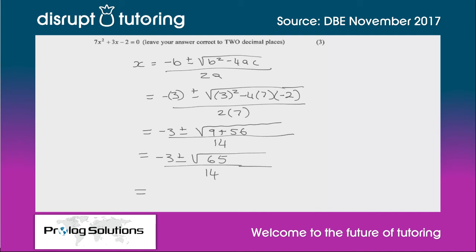When we put it into our calculator, we first use the positive version to get one answer, then the negative to get another. We end up with x = -0.79 or x = 0.36. That'll give you three marks. That's it from me.